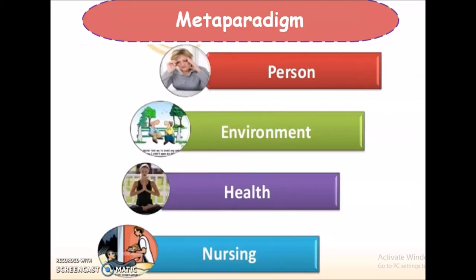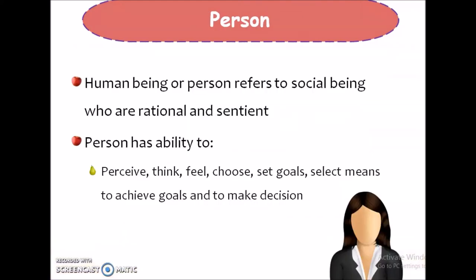Coming to the metaparadigm in King's theory. There are four metaparadigms as in any other theory: person, environment, health and nursing. Person or human being refers to a social being who is rational and sentient. She says that a person has the ability to perceive, think, feel, choose, set goals, select means to achieve goals and to make decisions.